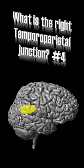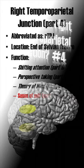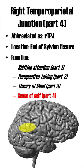What is the Right Temporal Parietal Junction, Part 4? Abbreviated as RTPJ, the Right Temporal Parietal Junction is located at the end of the sylvian fissure, between the temporal and parietal cortex.